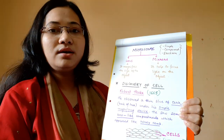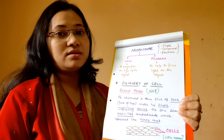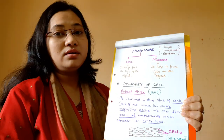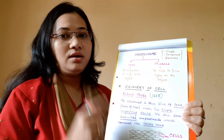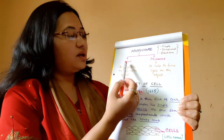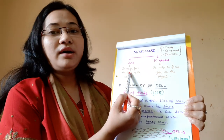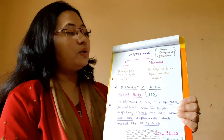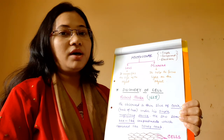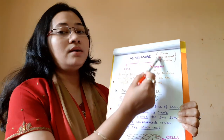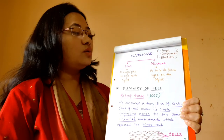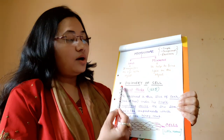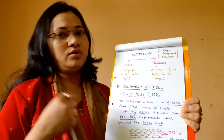A microscope is a device used to observe and study the cells of plants and animals. Microscopes consist of lenses and mirrors. The lenses help in magnifying the size of the object, and the mirrors focus light on the object, allowing us to see a magnified image.